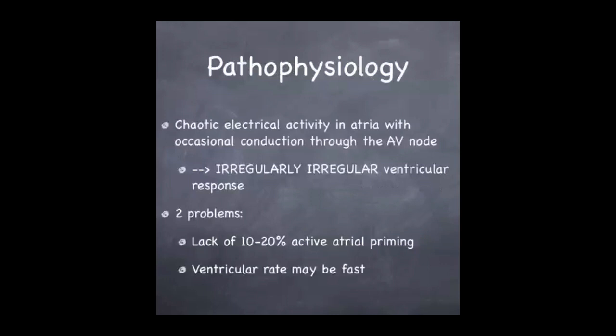In terms of the pathophysiology of atrial fibrillation, there tends to be chaotic electrical activity within the atria with occasional conduction through the atrioventricular node. This results in an irregularly irregular ventricular response. The first problem is that the ventricles lose out on the 10 to 20 percent of the cardiac output which is gained through active atrial priming due to contraction.